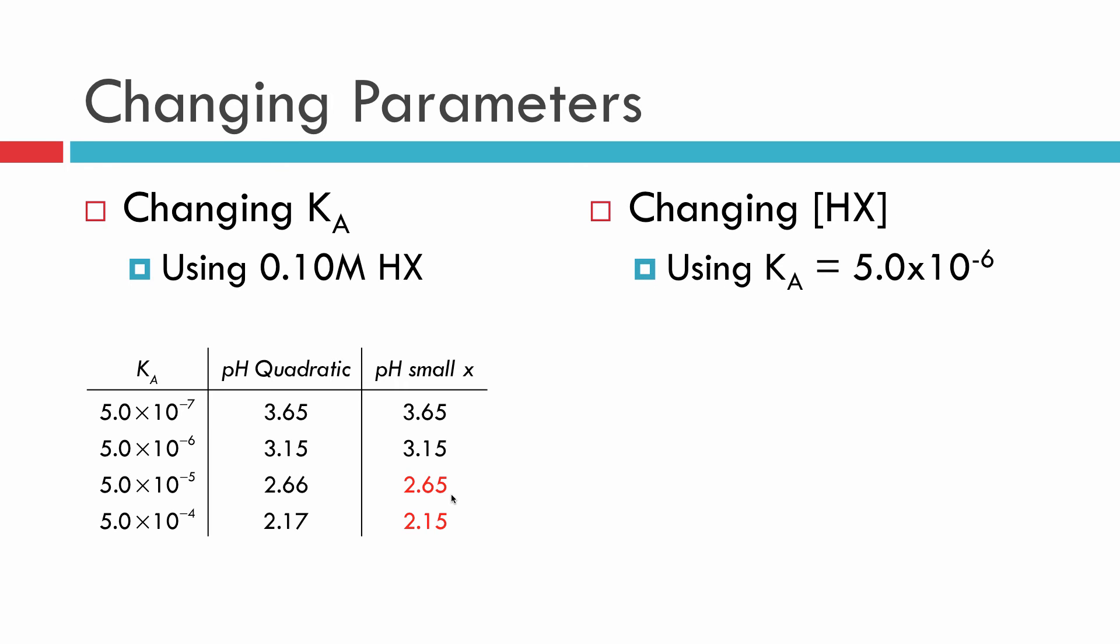Another thing we can do. We can change the initial concentration, but keep our equilibrium constant the same. I've chosen 10 to the minus 6th just for fun. I'm going to change my initial concentration. I'm going to solve for the pH using the quadratic and solve for the pH using the small x approximation. And we find that with 0.1 molar, same exact answer. With 0.01 molar, same exact answer. Uh-oh, 0.001 molar, look at that. They deviate greatly and then it gets way out of hand when we have 10 to the minus 4th.